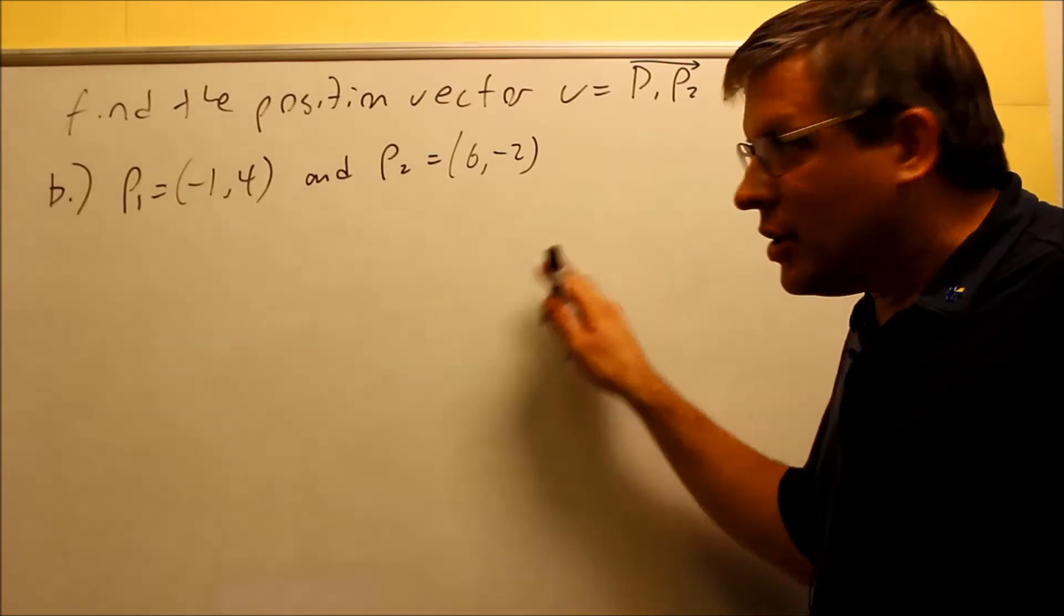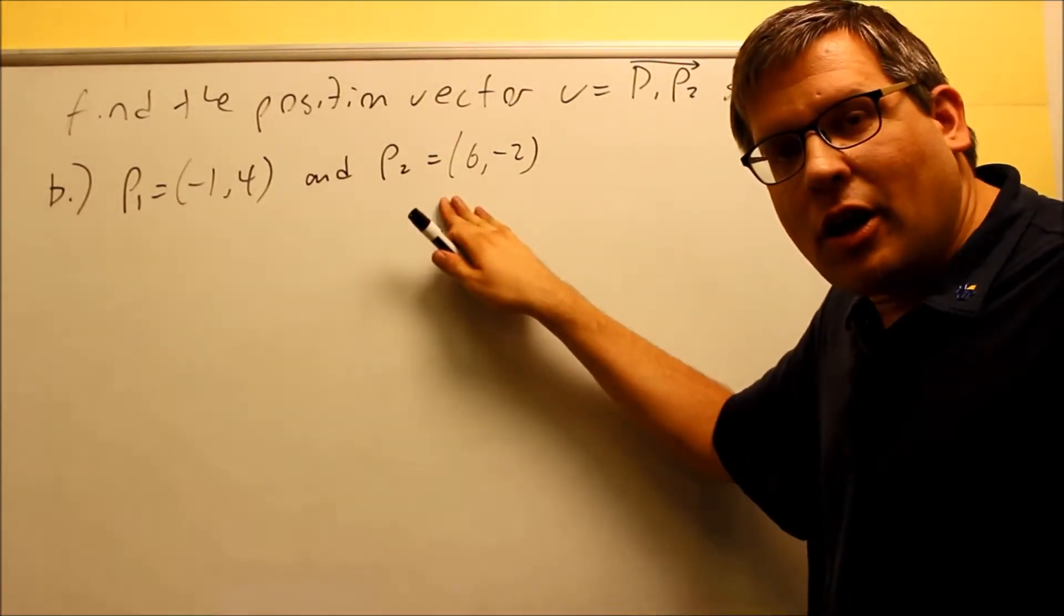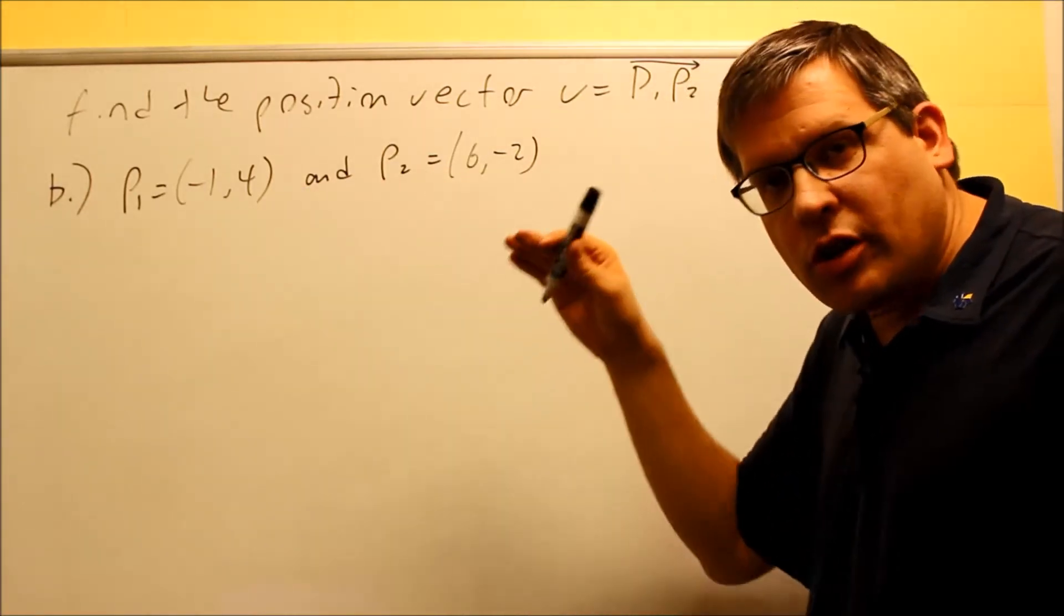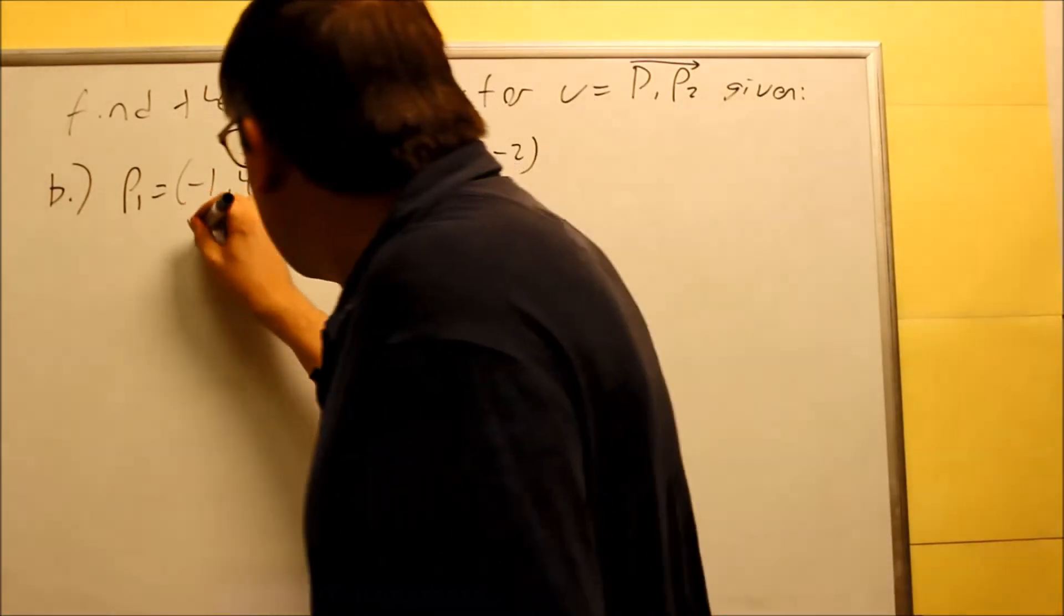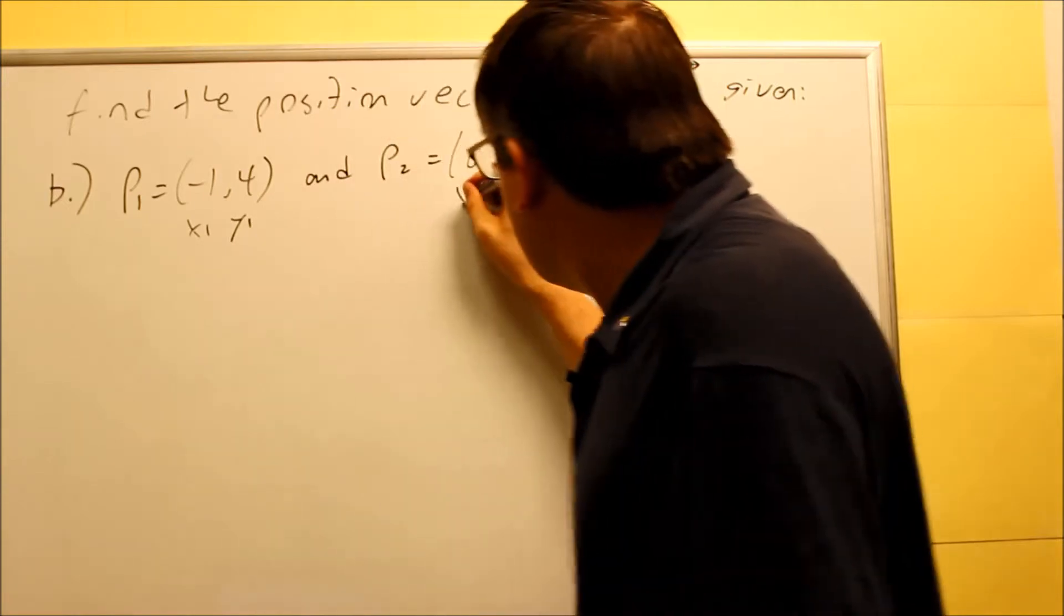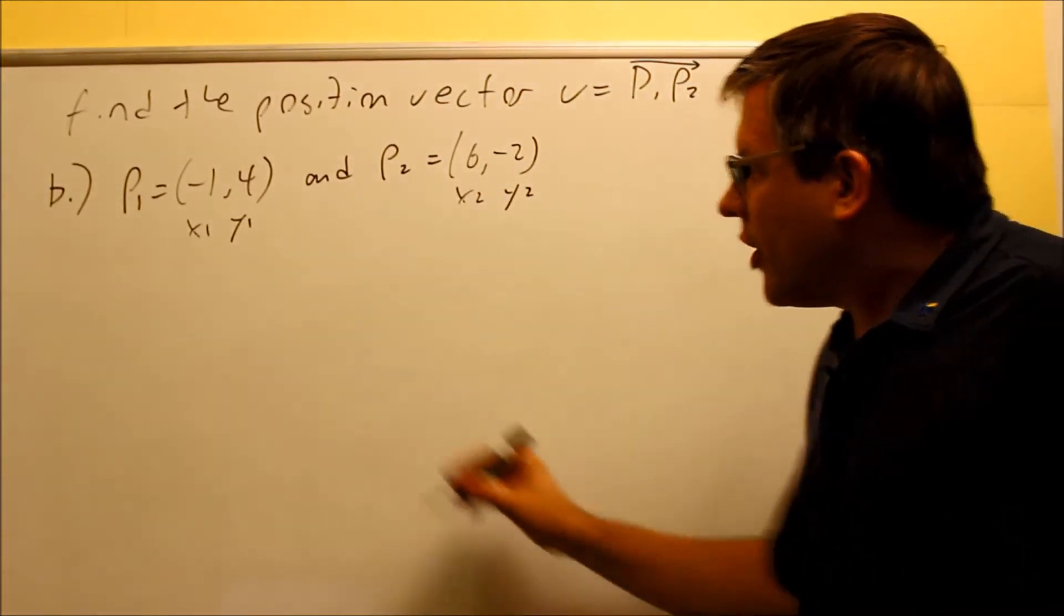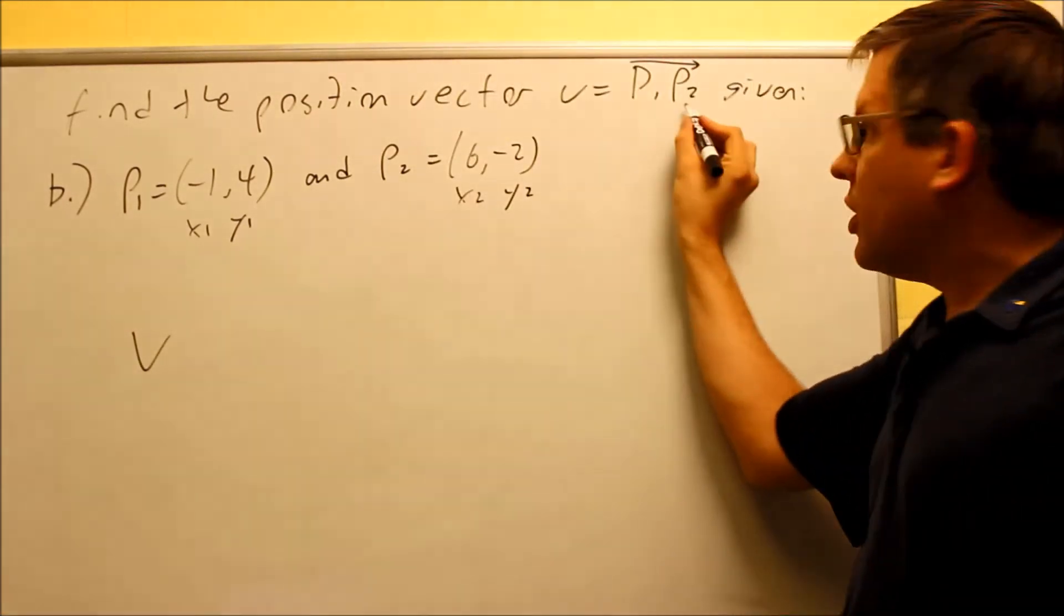Okay, now for part B. Here's P1 and here's P2. Again, what you want to do on this is label our X1, Y1 is this one. X2, Y2 is the second point that they gave. And you want to find a vector V that goes through P1, P2.